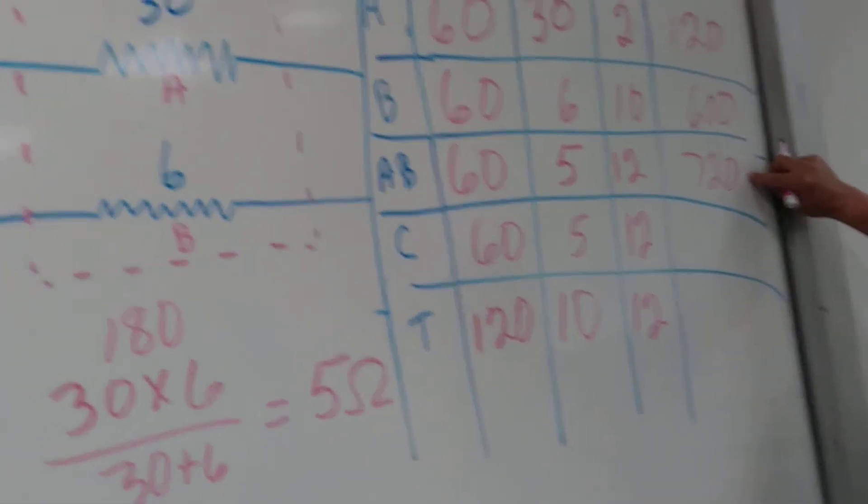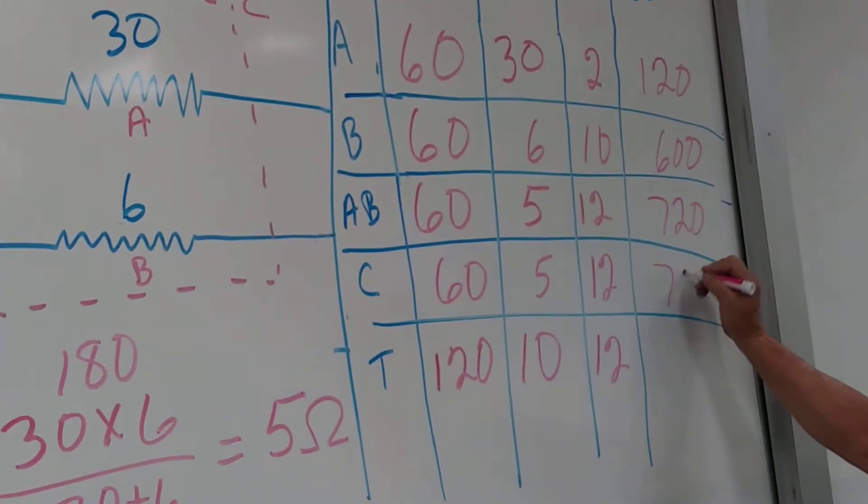Sure enough, 120 plus 600 equals 720. This one equals 720. It means this one has to equal 1440.